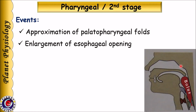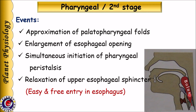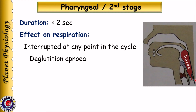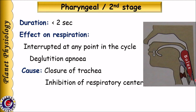Vocal cords approximate and the larynx is pulled anteriorly and upward, enlarging the esophageal opening. The epiglottis swings backward and closes the tracheal opening, thus preventing entry of bolus into the larynx. Approximation of palatopharyngeal folds and enlargement of the esophageal opening allows movement of bolus into the esophagus, along with initiation of pharyngeal peristalsis and relaxation of the upper esophageal sphincter. The entire duration of the pharyngeal stage is less than 2 seconds, and respiration is interrupted — this is called deglutational apnea.